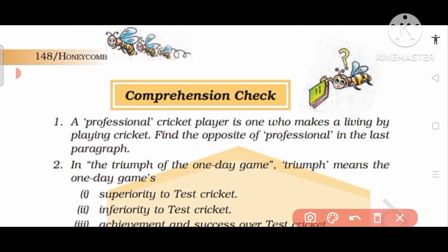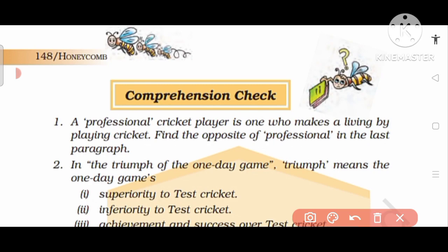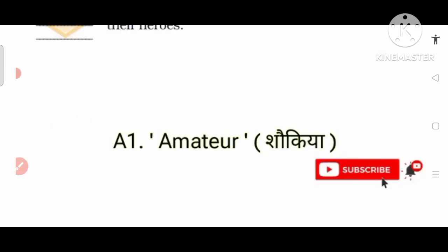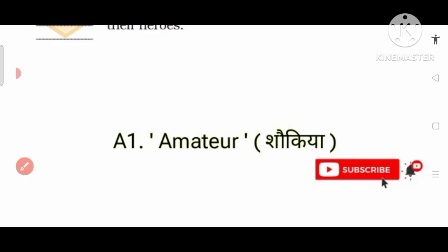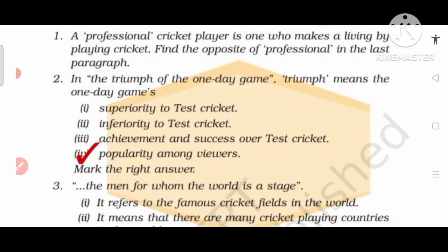Now we will go to page number 148 and do the comprehension check. Number 1: A professional cricket player is one who makes a living by playing cricket. Find the opposite of 'professional' in the last paragraph. The answer is 'amateur' — yaani ki shauq se khelne wala, na ki paise kamane ke liye.